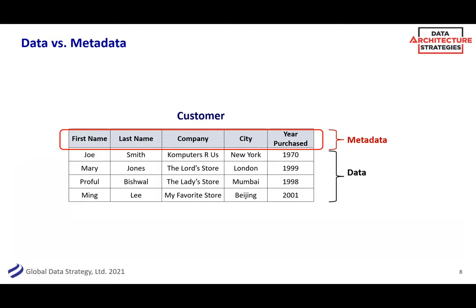Just a couple more examples — data versus metadata. Some people's data is other people's metadata. If you think of a database almost as a spreadsheet with names and addresses, and your company had a record that Joe Smith bought a computer at 'Computers Are Us' in New York and purchased it in 1970 — that's the data. The metadata is that 'Joe' represents the first name and 'Smith' is the last name. Something like a year — is that the year it was purchased, or the year that Joe was born? Is that a metadata issue or a data issue? That's the type of thing that can really make or break a business intelligence campaign.